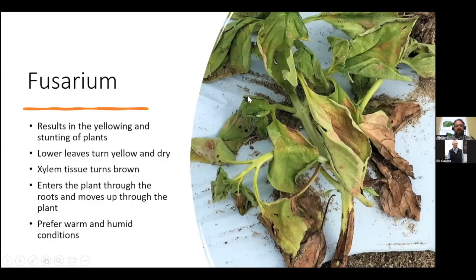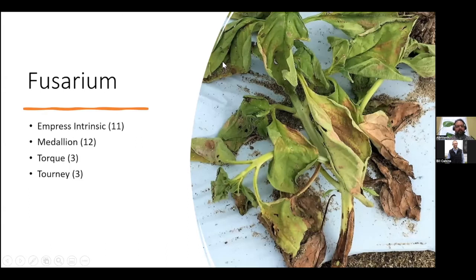Another disease commonly seen in foliage items is Fusarium. This typically results in yellowing and stunting of plants. As the plants get infected, the lower leaves will typically turn yellow and dry. The xylem tissue turns brown, and the disease will enter the plant through the roots and move up through the plant. This is another one that prefers warm and humid conditions. Some of the most recommended controls for Fusarium are Empress Intrinsic, Medallion, Torque, and Turney.